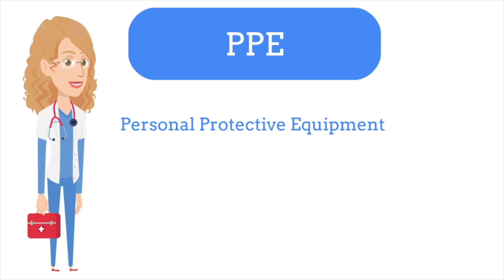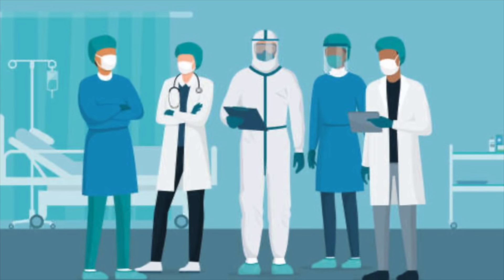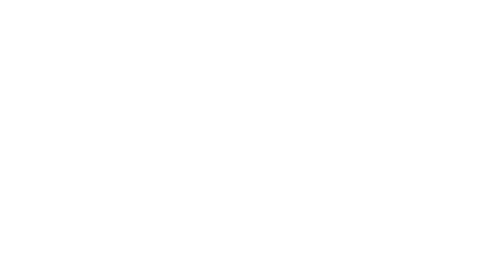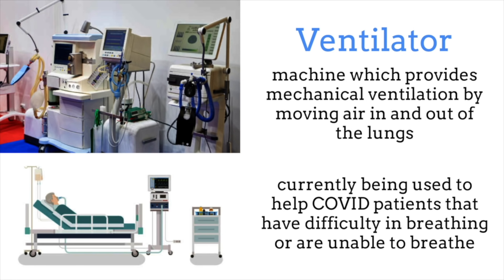PPE, also known as personal protective equipment, protects healthcare workers on the front lines. PPE includes clothing, masks, and other garments to protect from infection. A ventilator is a machine which provides mechanical ventilation by moving air in and out of the lungs. Ventilators are being used to help COVID patients that have difficulty breathing or are unable to breathe.